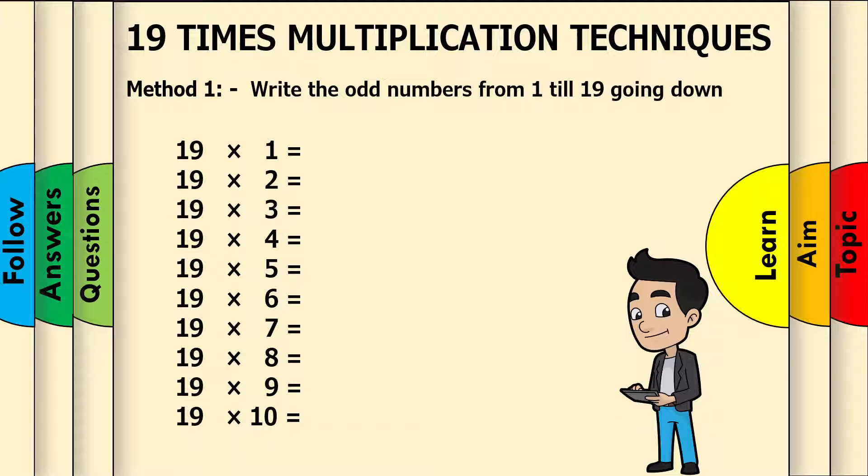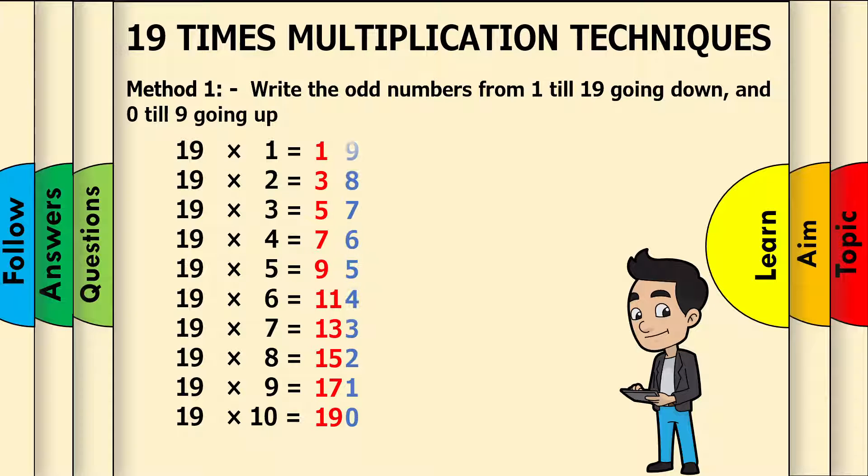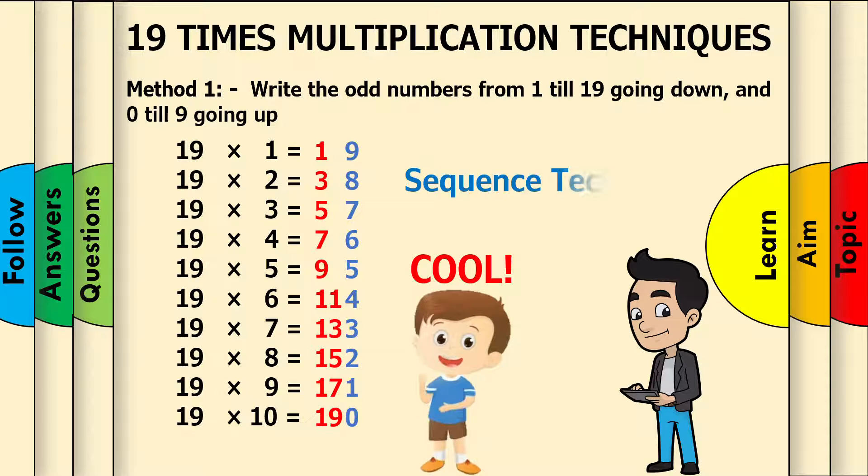Method 1: Write the odd numbers from 1 till 19 going down, and then all the numbers 0 till 9 going up. Cool! This is called a sequence technique.